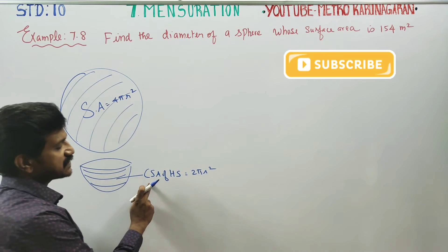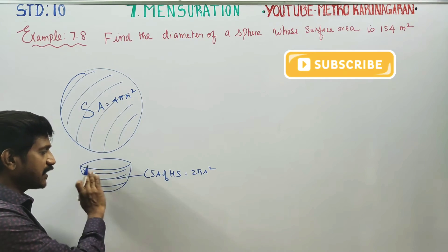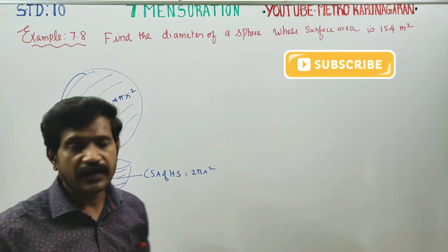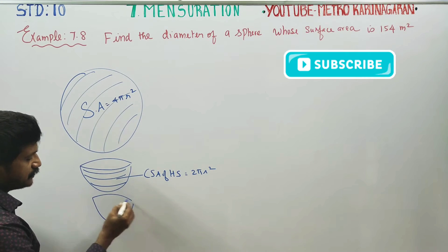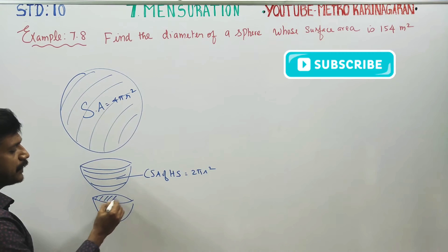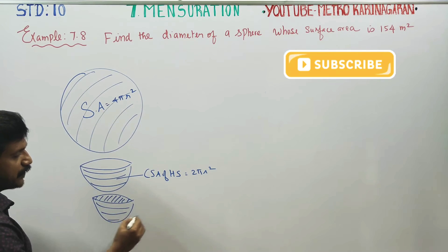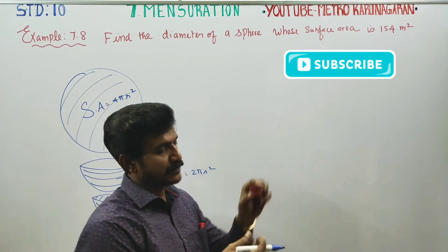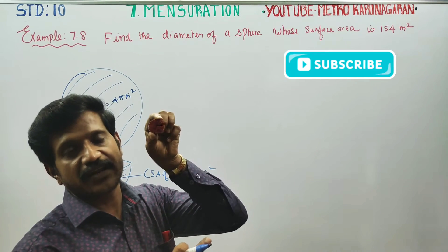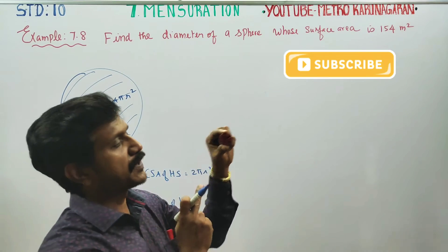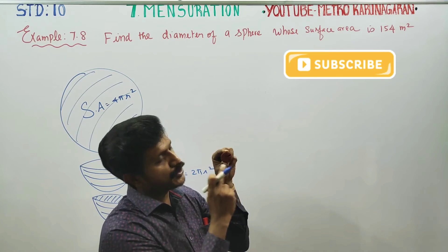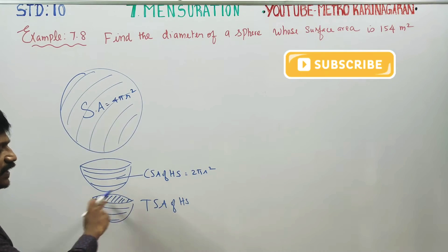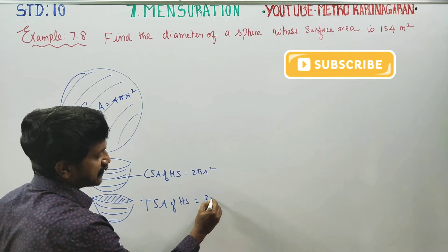Now consider the surface area of a hemisphere. If you look at the hemisphere, it has a bend or curve. This is the hemisphere. Looking at the hemisphere, you'll see the top and the bottom. This is the total surface area of the hemisphere. If you color it reddish, that area is 3πr².